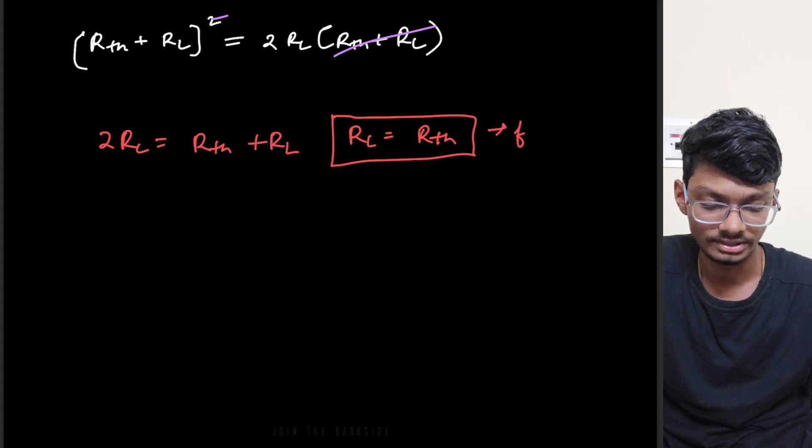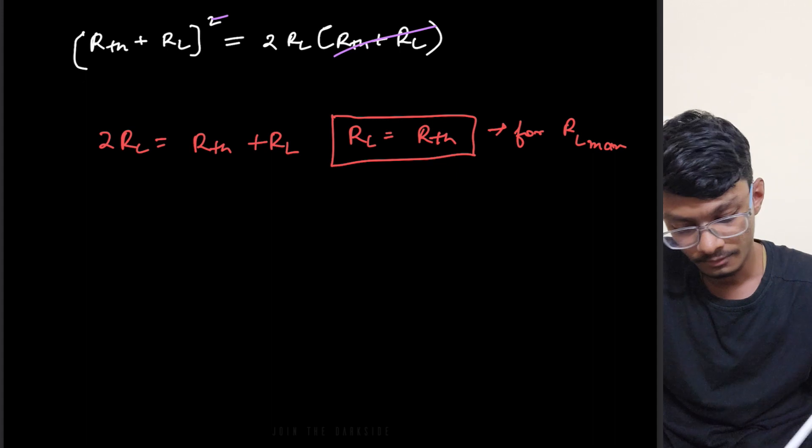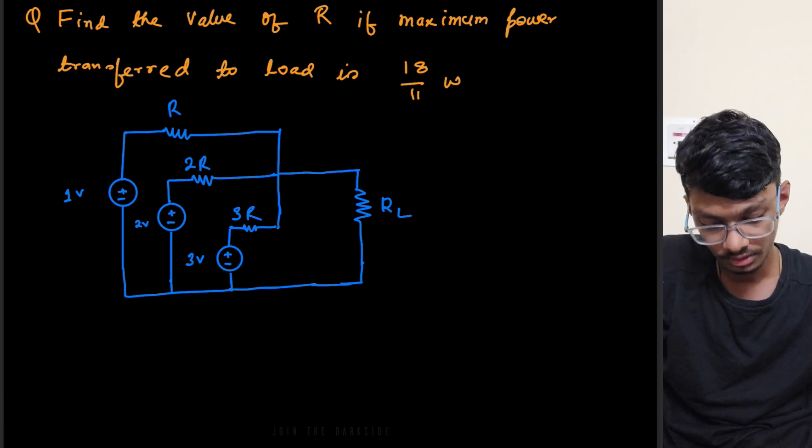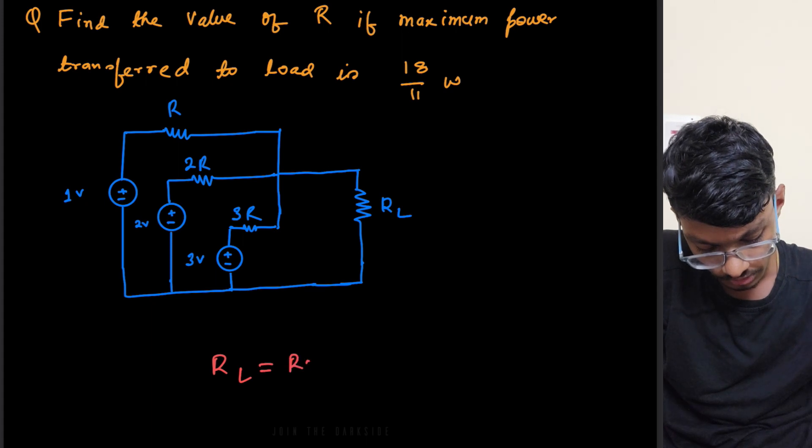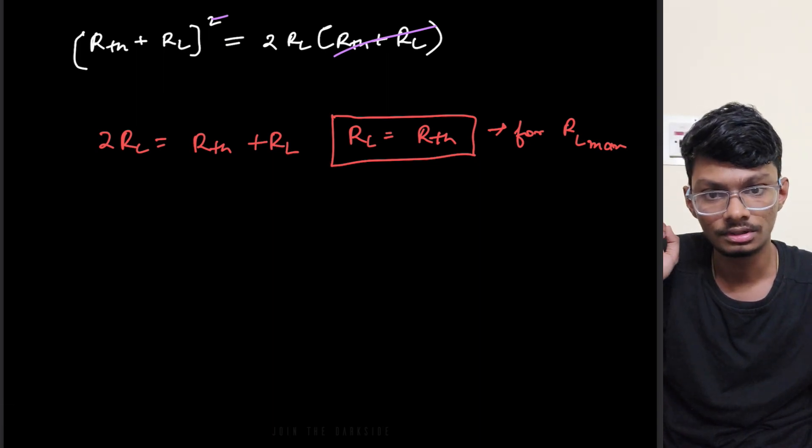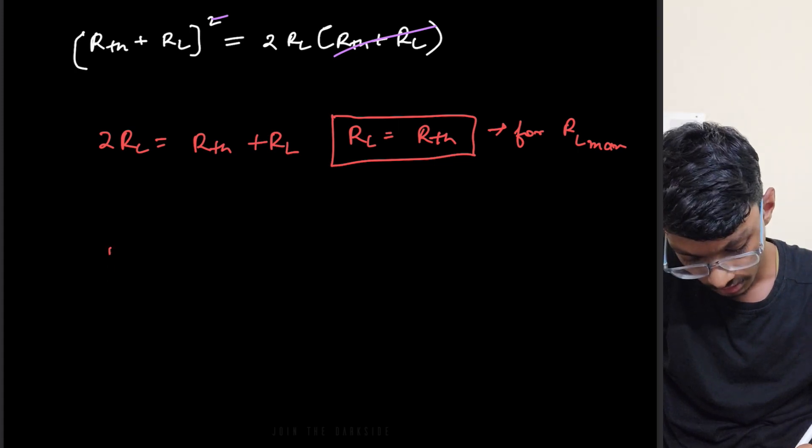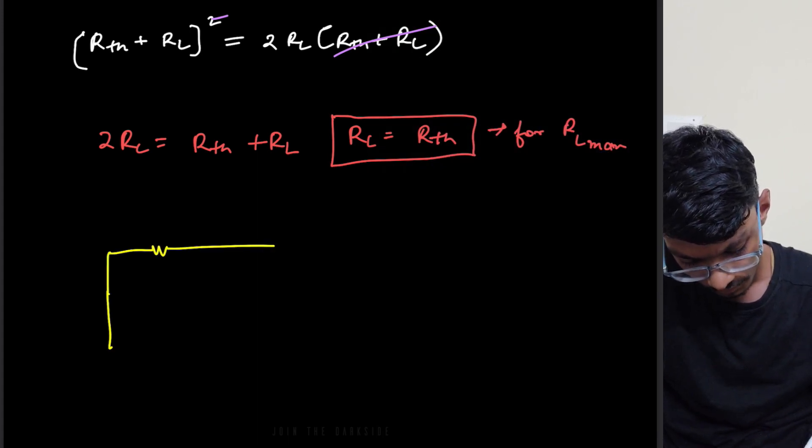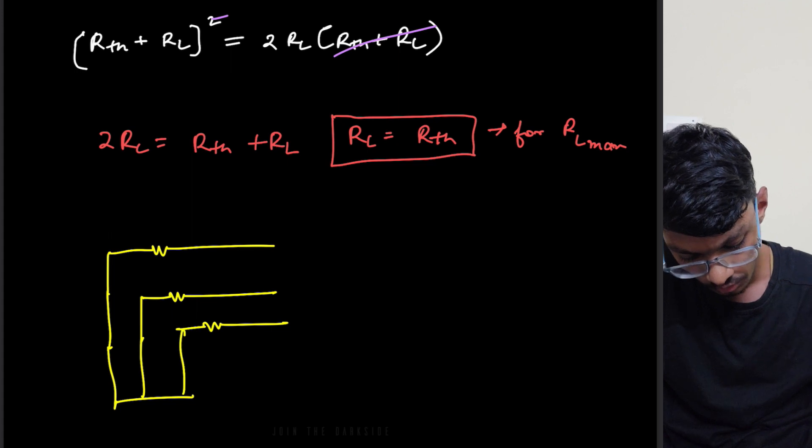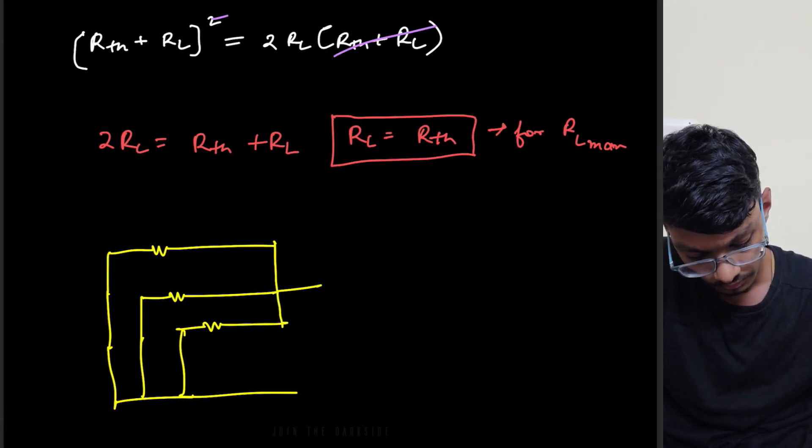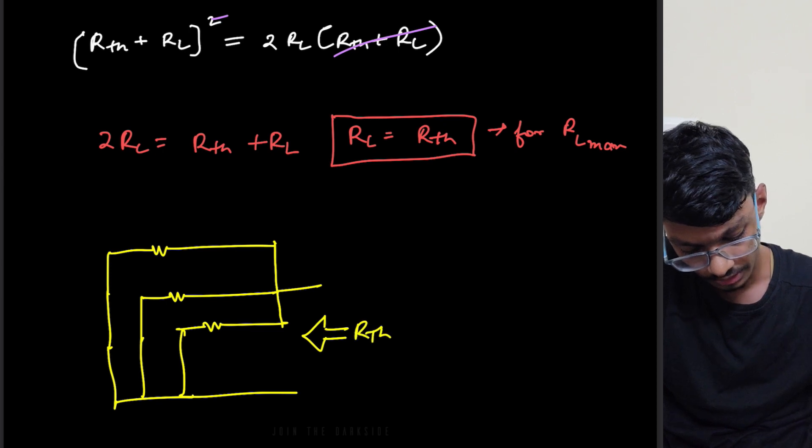So basically from this the condition comes for maximum power transfer. So here, now what is the Rth in our case? Let us go back to the circuit. For this to transfer maximum power, RL should be equals to Rth. So what is the Rth? Let me draw the equivalent circuit for Rth. We have to short the independent sources. So if I short the independent sources, all the sources are shorted and we are calculating the output resistance from this end.